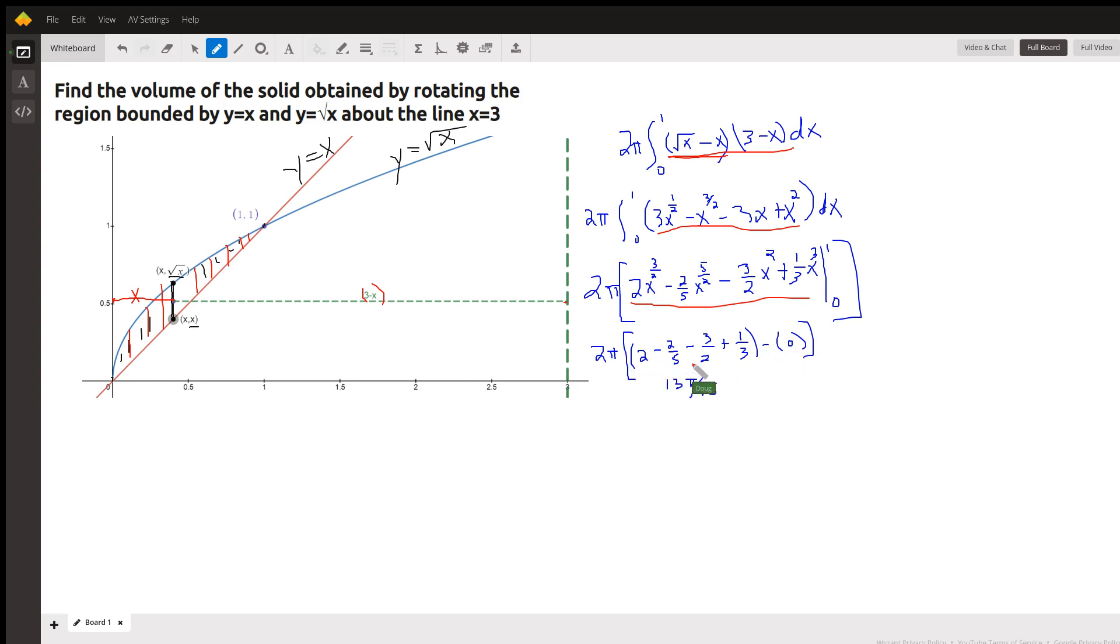And if you combine these fractions with a common denominator, multiply it by 2 pi. There's what you get.